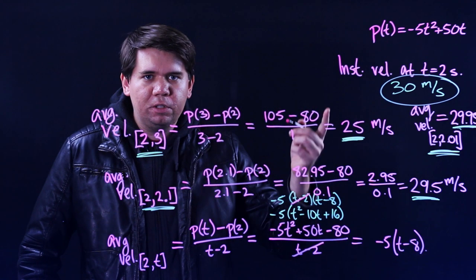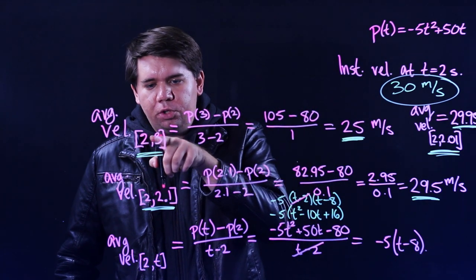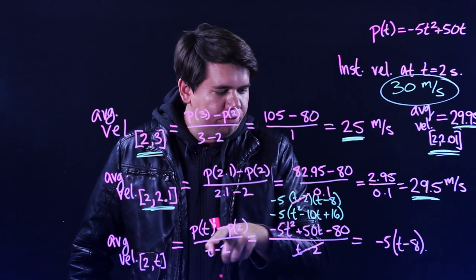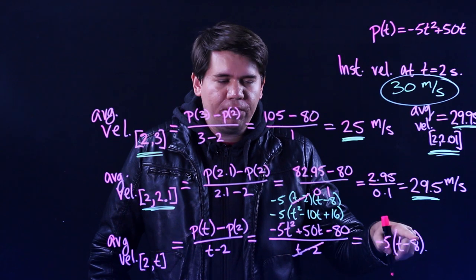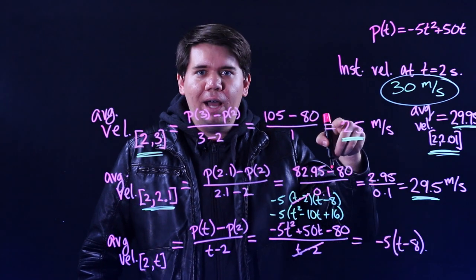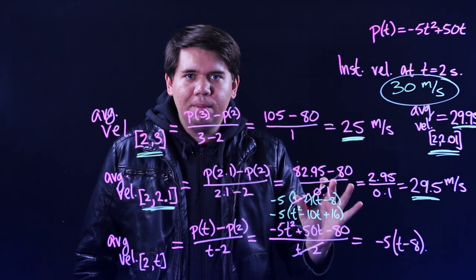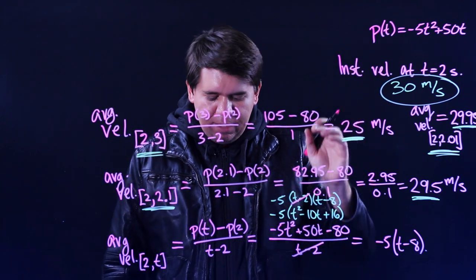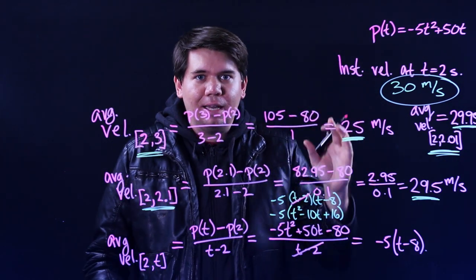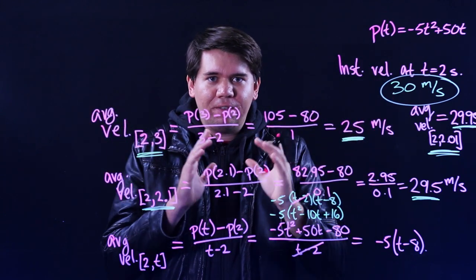Go ahead and test some of these previous ones. Like, what is the average velocity from 2 to 3? Well, you can just plug 3 in for your t. 3 minus 8 is minus 5 times minus 5 is 25. Sure enough, it seems to work. So then what we want to do to find the instantaneous velocity. This is the great insight. This is Isaac Newton's great insight in developing the calculus.